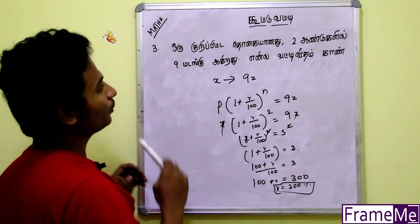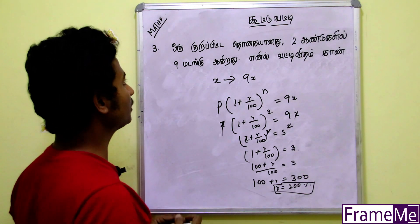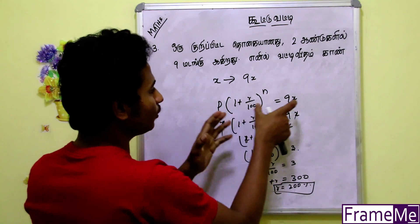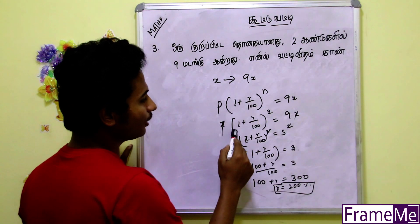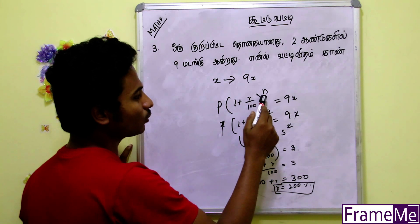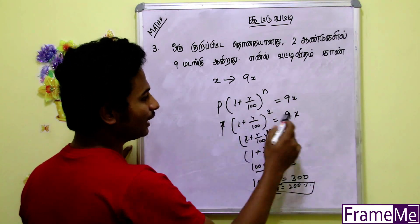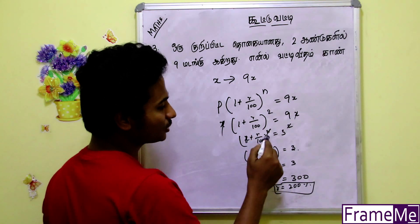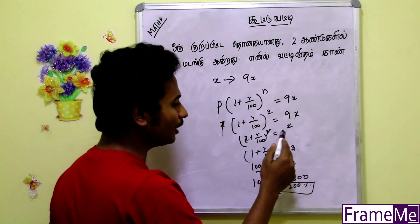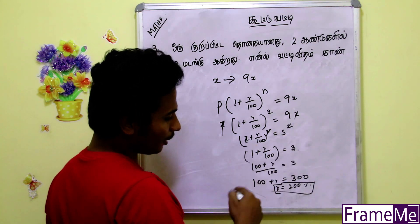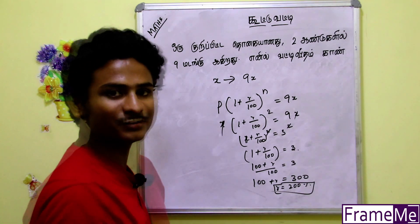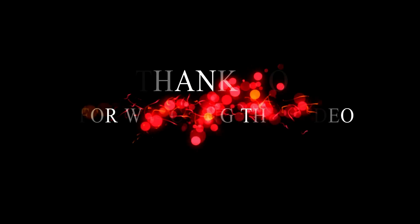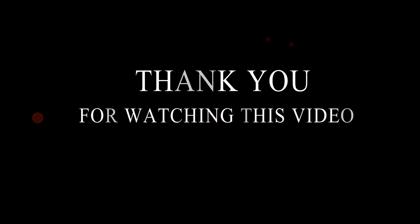Let's say 1 plus 1 plus R by 100. So 1 plus R by 100 whole power N. So one square cancels, then 300 and 200% cancels. If you like this video, share, subscribe and like this video.